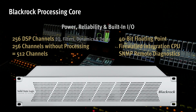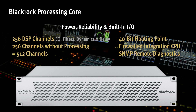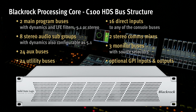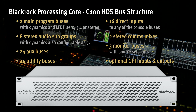At the heart of the C100 HDS is the BlackRock processing core, providing self-healing audio processing for up to 256 channels, each with EQ, filters, dynamics, delay and their associated signal processing and bussing. A further 256 channels without processing are also supported for a total of 512 channels. It has a 40-bit floating point architecture underpinning absolute sonic performance that is key to SSL's design philosophy.